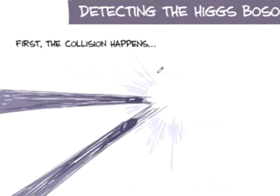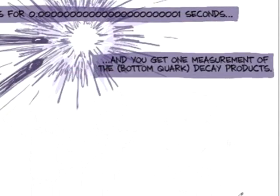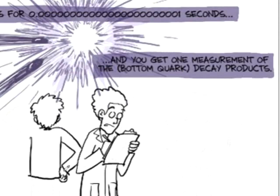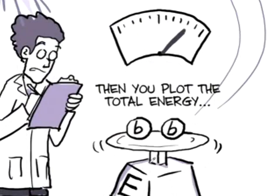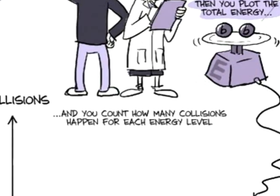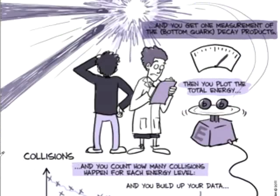Right, so the collision happens. It lasts for like 10 to the negative 23 seconds. And you get one measurement. So if you say, well, I'm going to plot the mass, the total energy of this guy. I'm going to add this guy and this guy together and add the total energy. This axis here is number of collisions. You do an individual experiment, you get one measurement. Here. You do another one, you get another measurement. You do another one. Eventually, you build up your data. And the data looks like this, for example.